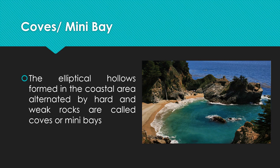Coves are a coastal feature — partially land-enclosed mini bays. Elliptical-shaped hollows formed in coastal areas alternated by hard and weak rocks are called coves or mini bays. The weak rocks are eroded while hard rocks remain, creating the elliptical-shaped hollows known as mini bays.